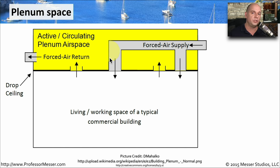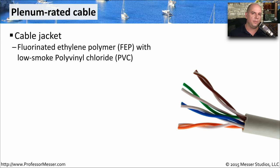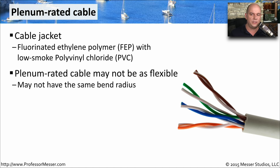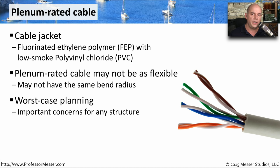If there is a fire, all of the smoke and chemicals from network cables in the plenum will get into the airspace, so we have to think carefully about what type of cables we use there. Fortunately, there's a type of twisted pair cabling designed for the plenum, using a fluorinated ethylene polymer with a low-smoke PVC jacket. This means that if there is a fire, it produces a minimal amount of smoke compared to other twisted pair cabling. This cable may not be as flexible or have the same bend radius, but you have to consider the worst-case scenario of a fire and making sure everyone can get out safely.